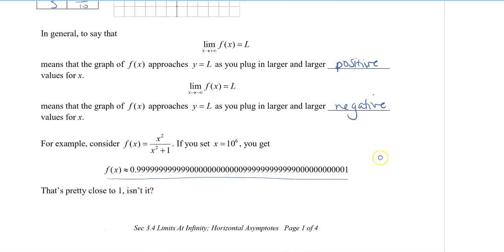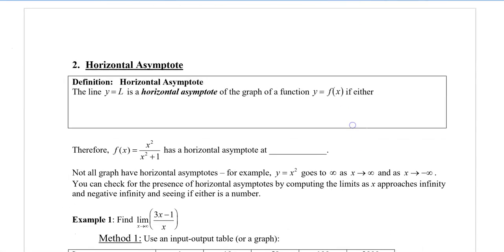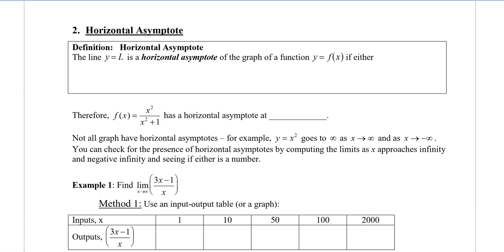Let's take a look at how this leads into horizontal asymptotes. We can define a horizontal asymptote as the line y equals L of the graph, and it occurs if either the limit of f of x as x approaches infinity equals L or the limit of f of x as x approaches negative infinity equals L. Therefore, we can say that f of x has a horizontal asymptote at y equals 1.